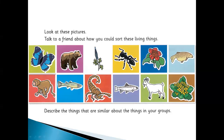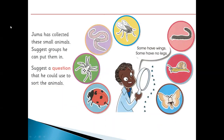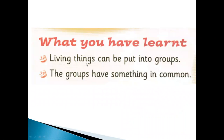There is another activity: Ajuma has collected these small animals. Suggest groups he can put them in and a question he could use to sort the animals. You can see different insects here — butterfly, scarab, ladybug, worm, bee. These are all invertebrates because they are all insects. You can make groups like: with legs and without legs — this one, this one, and this one have legs; others are without legs.